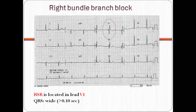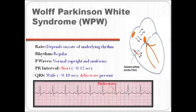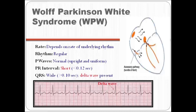In right bundle branch block, RSR is located in lead V1. In left bundle branch block, there is an M pattern in lead V6. In Wolf-Parkinson-White syndrome, there are abnormal conducting fibers called the bundle of Kent between atrium and ventricle, bypassing the AV node delay. So the PR interval is short, and it is characterized by a delta wave.